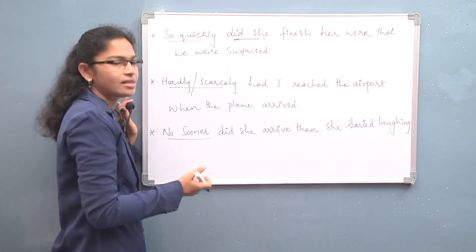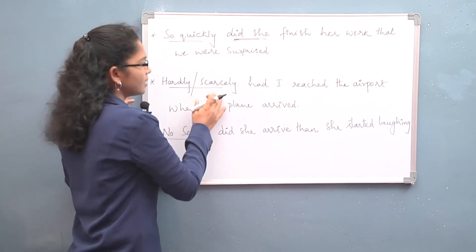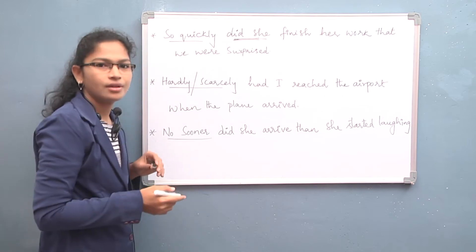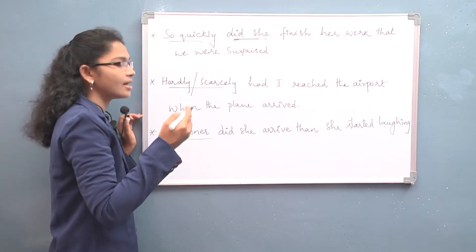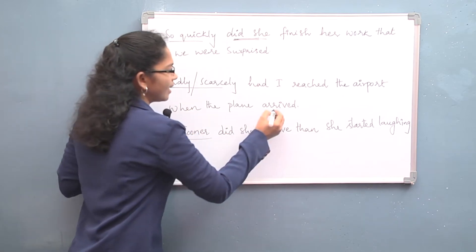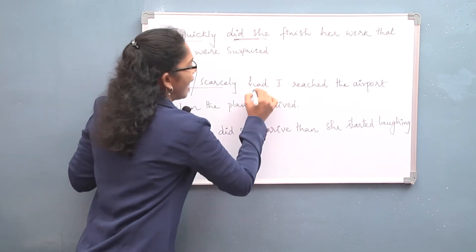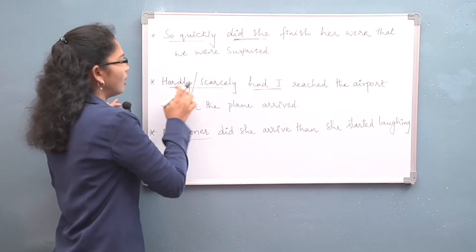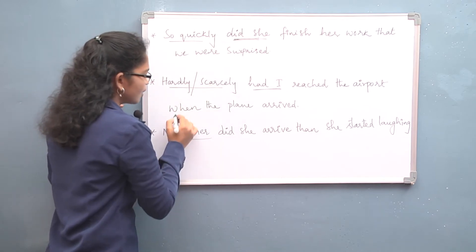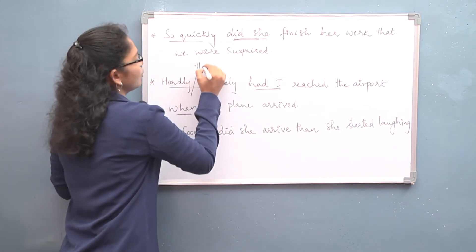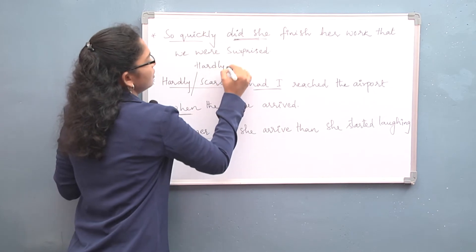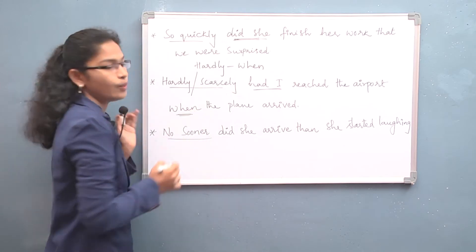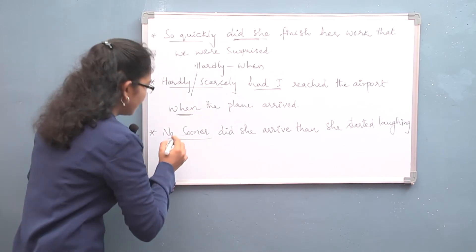Next: 'Hardly' and 'scarcely' have the same meaning. 'Hardly had I reached the airport when the plane arrived.' Notice it is 'had I', not 'I had'. For 'hardly' and 'scarcely', the conjunction used is 'when' — that's why we have used 'when' here.